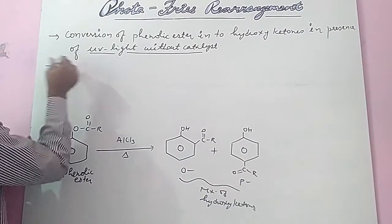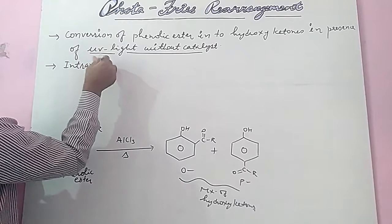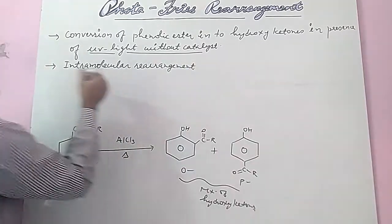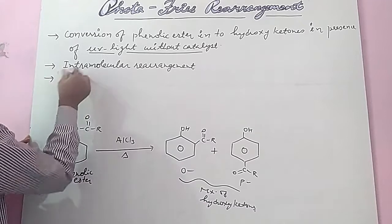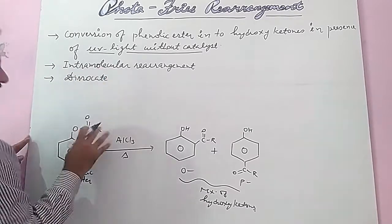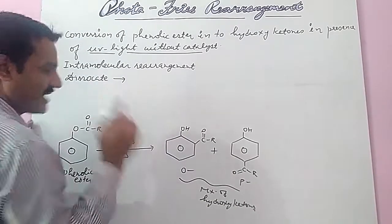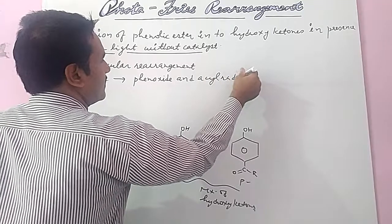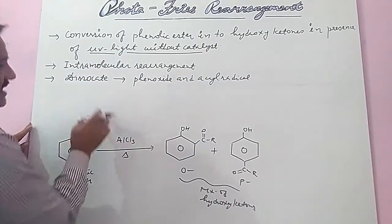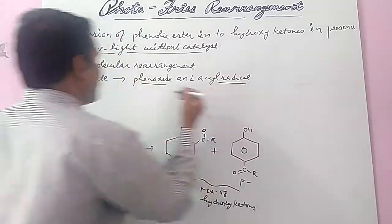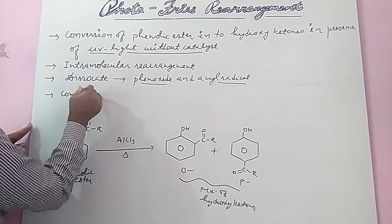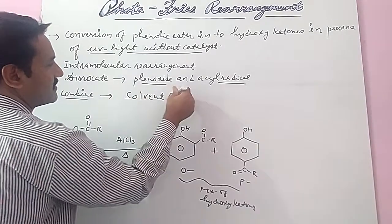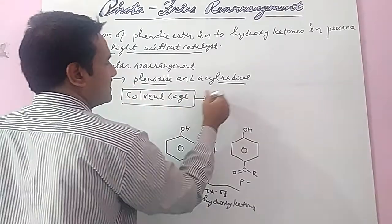In this rearrangement, there is an intramolecular rearrangement. When light is absorbed by the phenolic ester, it dissociates into radicals — a phenoxide radical and an acyl radical. These two radicals then combine with the solvent and form a solvent cage. This solvent cage is the intermediate.